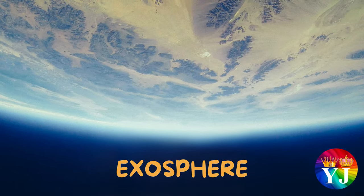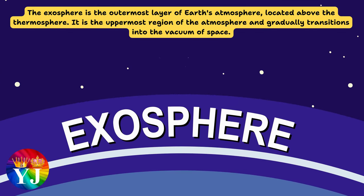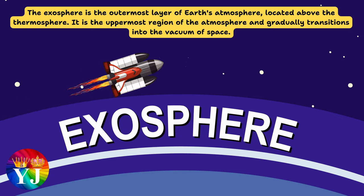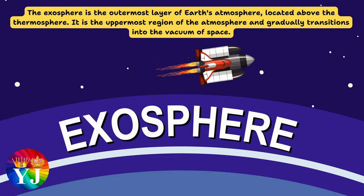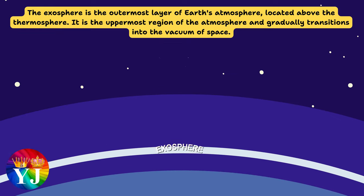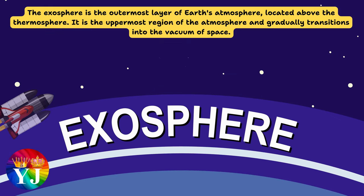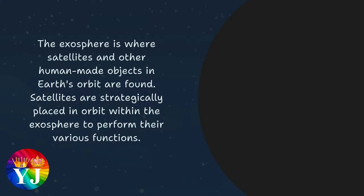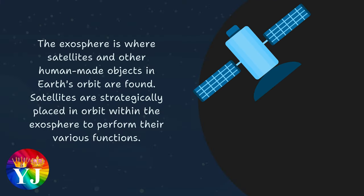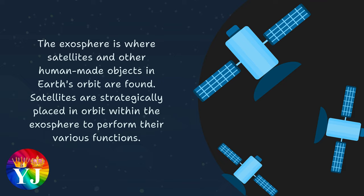The exosphere is the outermost layer of Earth's atmosphere, located above the thermosphere. It is the uppermost region of the atmosphere and gradually transitions into the vacuum of space. The exosphere is where satellites and other human-made objects in Earth's orbit are found. Satellites are strategically placed in orbit within the exosphere to perform their various functions.